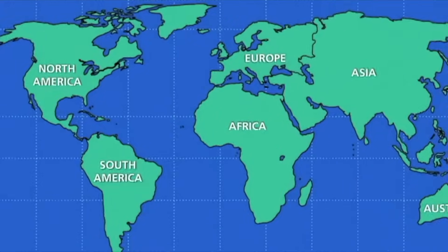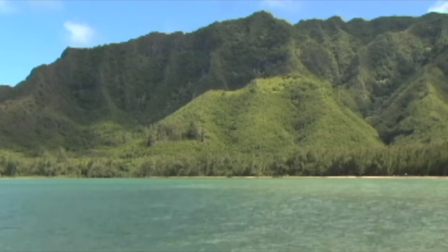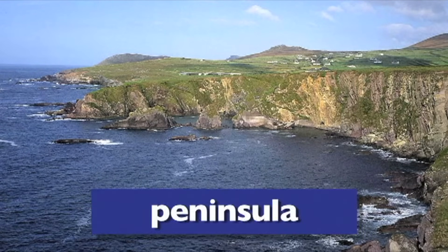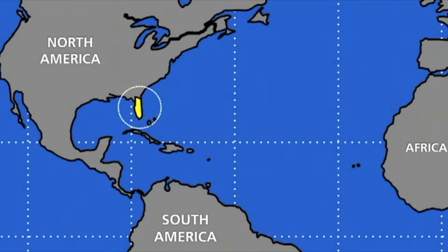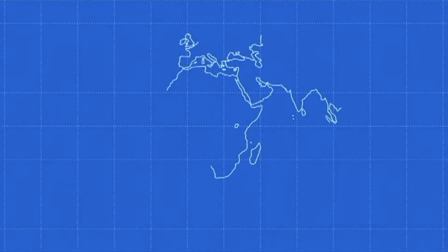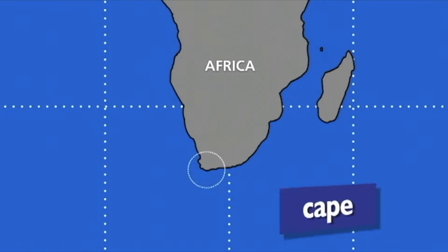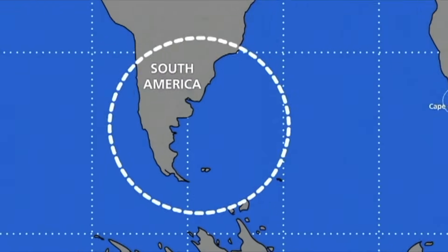Some land areas are surrounded by water. Island is a geographical term used to describe dry land that is completely surrounded by water. There are islands all over the world, like Baffin Island in Canada and the Hawaiian Islands in the Pacific Ocean. There are also pieces of land not completely surrounded by water — they're called peninsulas. The state of Florida is an example of a peninsula, surrounded on three sides by water. Some pieces of land stick out into the ocean and have a special name: capes. Two good examples are the Cape of Good Hope at the southern tip of Africa and Cape Horn, the southern tip of South America.